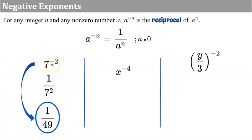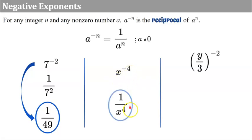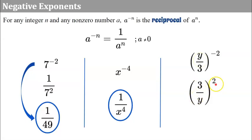Think of a negative exponent as a way to write a fraction. For your practice: x to the negative four becomes one over x to the fourth, and that's fully simplified. Here's a trick: if you have a fractional value inside parentheses with a negative exponent, flip the fraction and write the reciprocal, and the exponent becomes positive. So one-third to the negative two becomes three squared over y squared, which is nine over y squared.